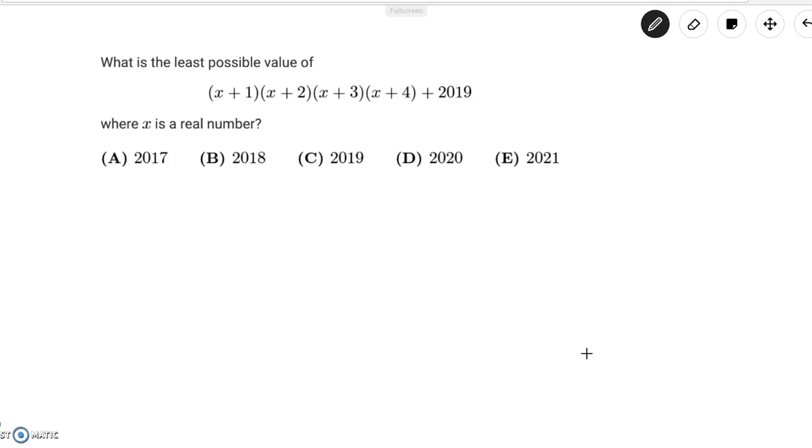Here we're not given a quadratic but a quartic, and we want to solve this. Since 2019 is simply a constant, we can leave it aside for now and focus on the expression (x+1)(x+2)(x+3)(x+4).